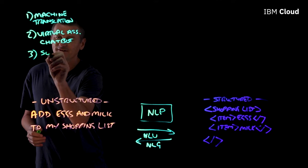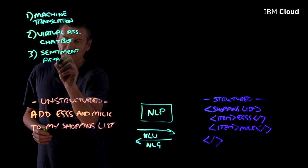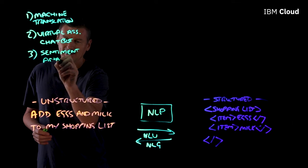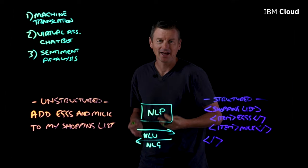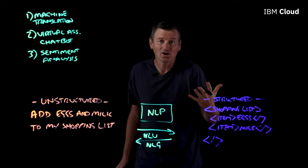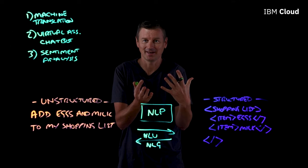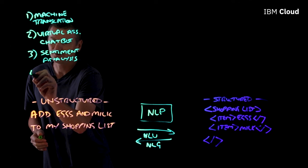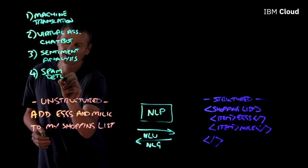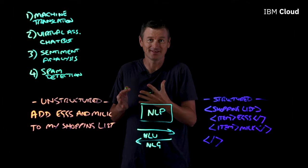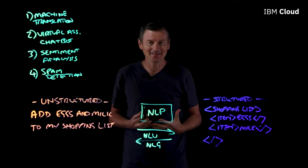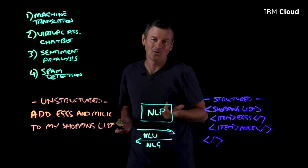Another use case is sentiment analysis. This is taking some text — perhaps an email message or a product review — and trying to derive the sentiment expressed within it. For example, is this product review a positive or negative sentiment? Is it a serious statement or is it being sarcastic? We can use NLP to tell us. And then finally, another good example is spam detection — looking at a given email message and trying to derive whether it's real or spam. We can look for pointers like overused words, poor grammar, or an inappropriate claim of urgency, which can all indicate spam.